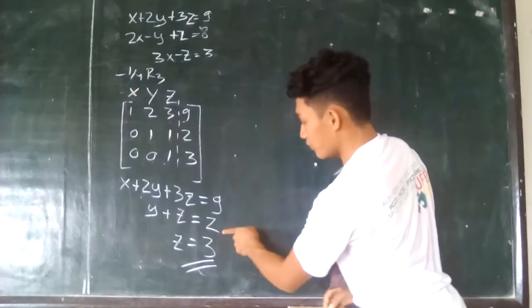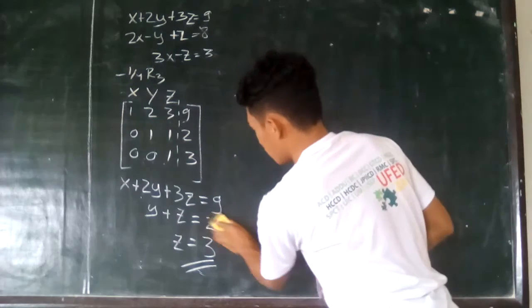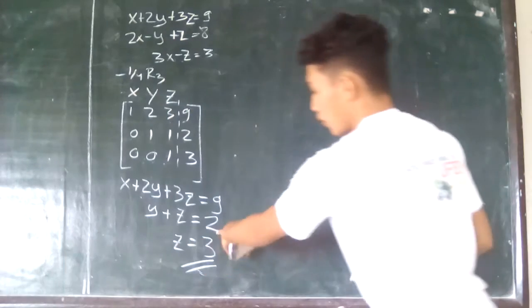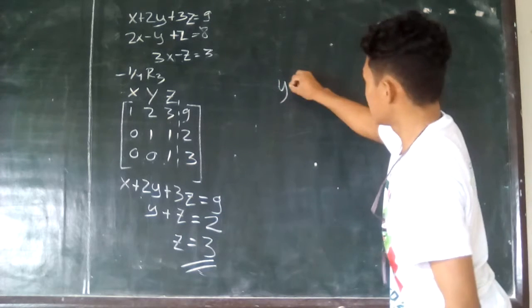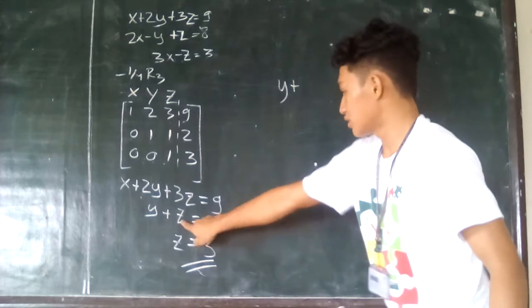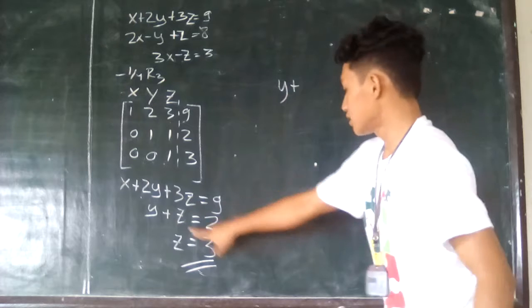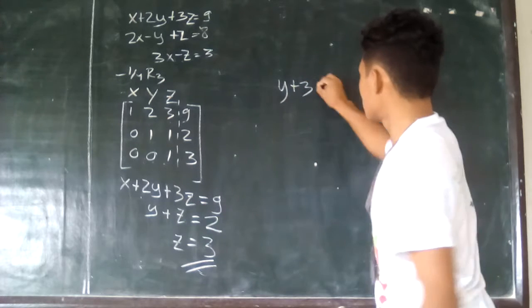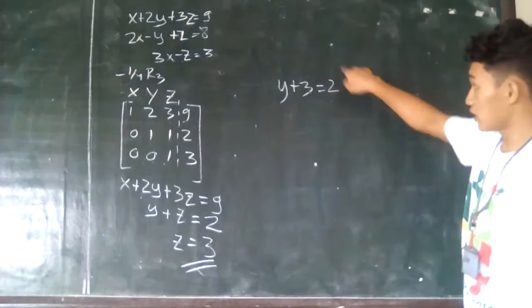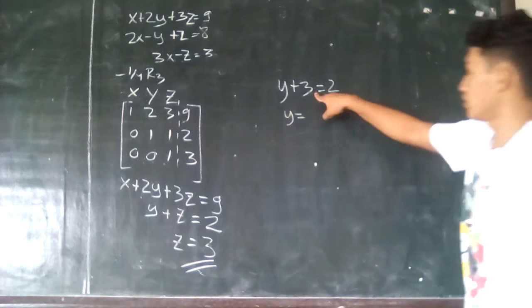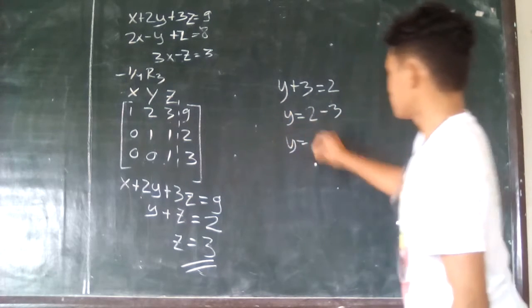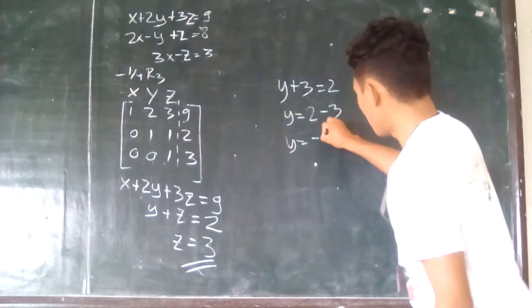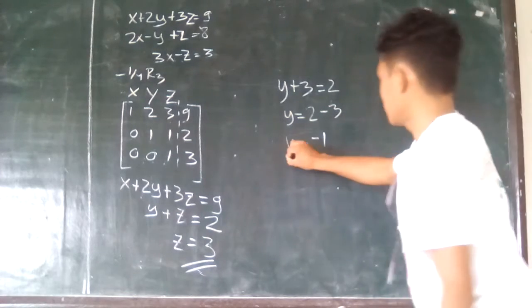Now, how to find the value of y? By back substitution. Substitute the value of z, which is 3, into the y equation. So y plus z equals 2 becomes y plus 3 equals 2. Transpose 3: it becomes negative, so y equals 2 minus 3. Y is equal to negative 1. So we already have the y value.